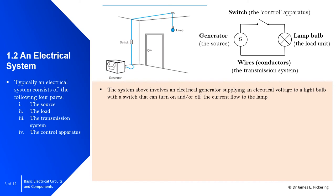Here is an example involving an electrical generator supplying electric voltage to a lamp. There is a switch that can effectively turn the current flow to the lamp on and off. This is represented by a schematic where wires are shown as lines, the switch, the lamp bulb as a circle with an X, and the generator as a circle with a G.